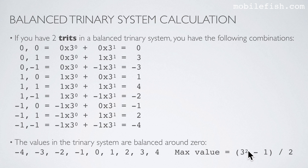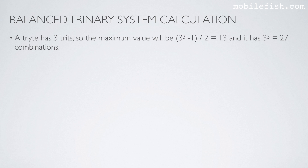The 2 represents the number of trytes. A tryte has 3 trits, so the maximum value will be 3 to the power of 3, minus 1, then divided by 2, which equals 13. And it has 3 to the power of 3, or 27, combinations.